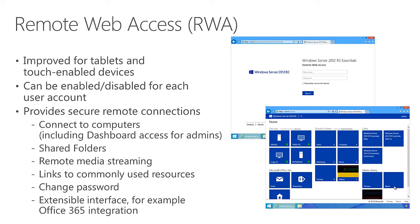Remote Web Access provides secure remote access back to desktop computers in the office network when you're out on the road. This is also very useful for partners who can connect to the server to do remote administration for their customers. It also provides access to the shared folders in the environment. You can optionally install a media streaming component - discussed in a previous module - to stream music and video through the web browser from the central server. You can also define administrator-configured links to commonly used resources.